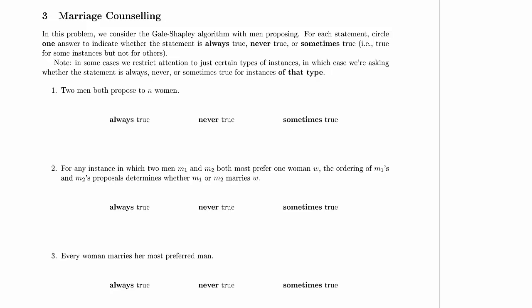For each statement, circle one answer to indicate whether the statement is always true, never true, or sometimes true — true for some problem instances but not true for other problem instances. In some cases, we're restricting attention to certain types of instances. Remember: with men proposing, men get their optimal outcome among all possible stable matchings, and women get their pessimal outcome. When reversed, women get their optimal outcome and men get their pessimal outcome.